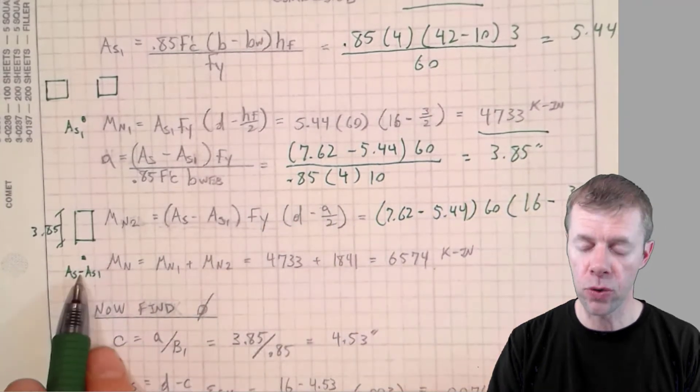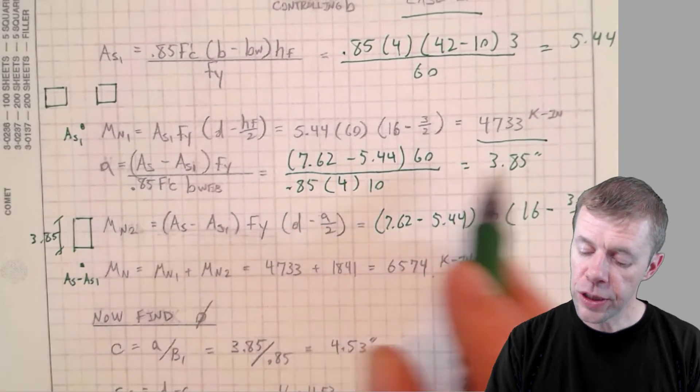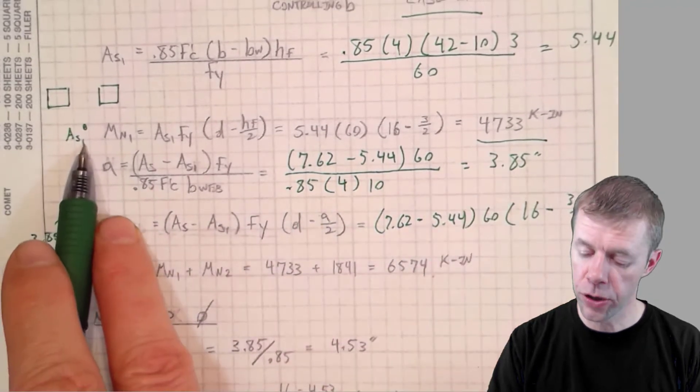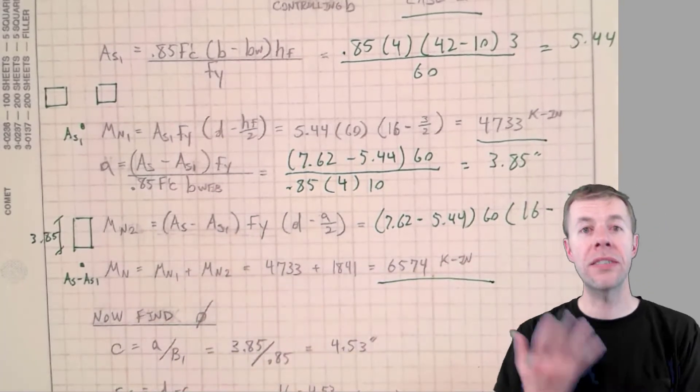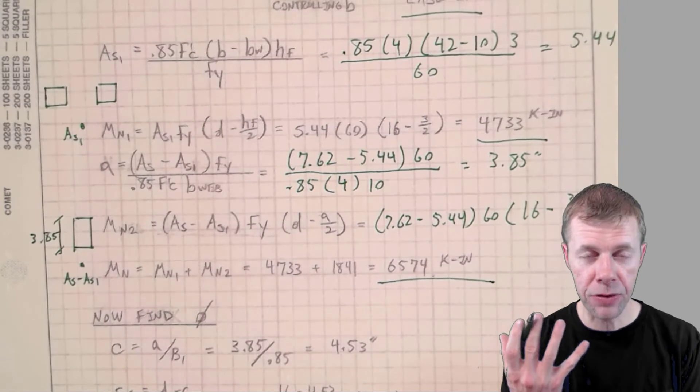That's the moment from this part of the structure plus this moment. That's from this part of the structure and I add them together and I get my total moment. That's it. That's my total moment capacity.